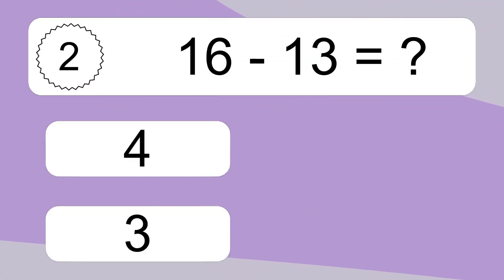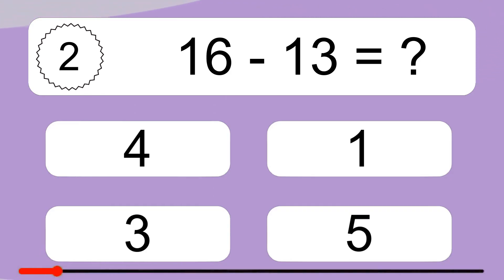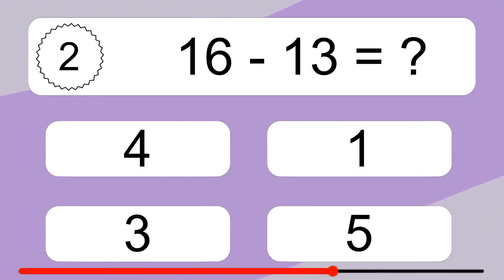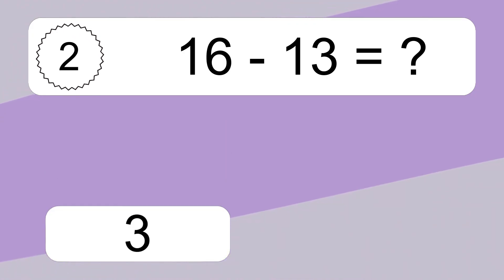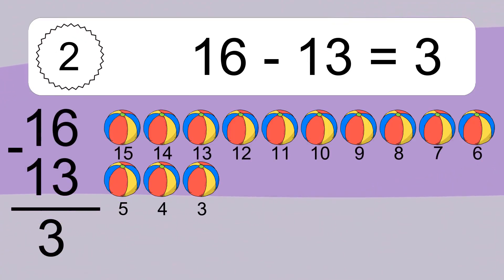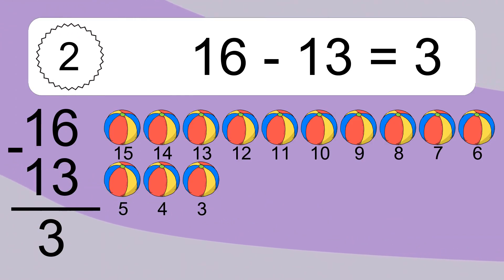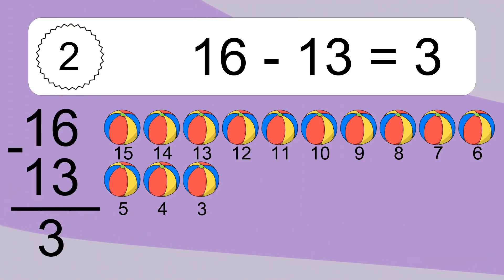16 minus 13 equals what? 16 minus 13 equals 3. Let's count it: 15, 14, 13, 12, 11, 10, 9, 8, 7, 6, 5, 4, 3.